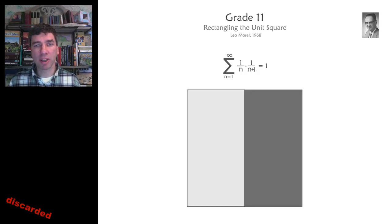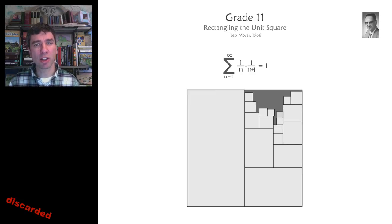So for example, we could have the first rectangle here would be 1 times 1 half, and the second rectangle would be 1 half times 1 third. And you can see that there's a question here. Could all of these rectangles get packed into the unit square?